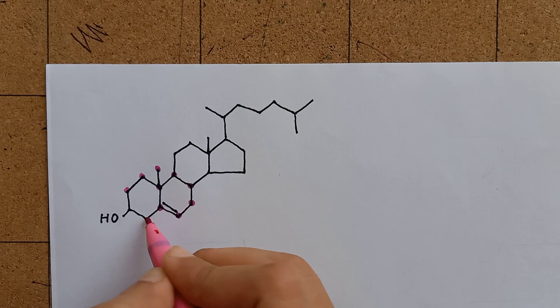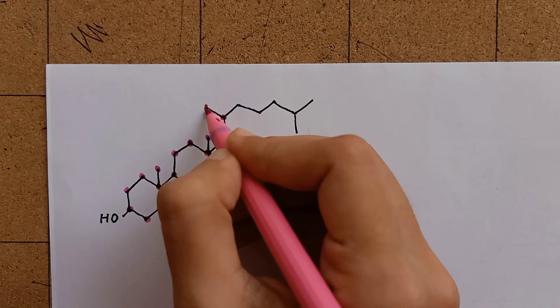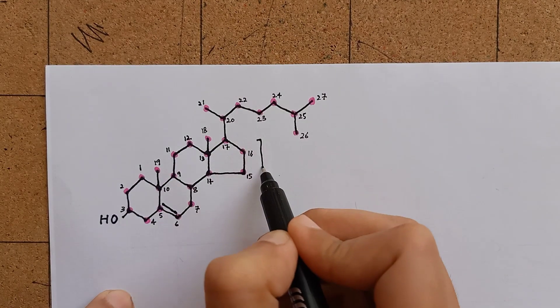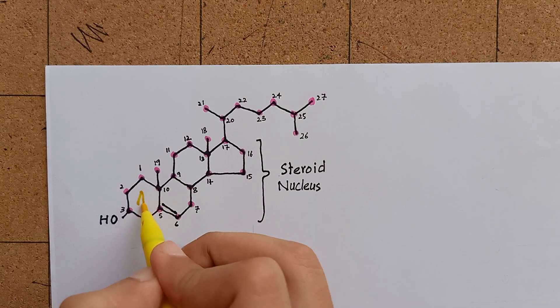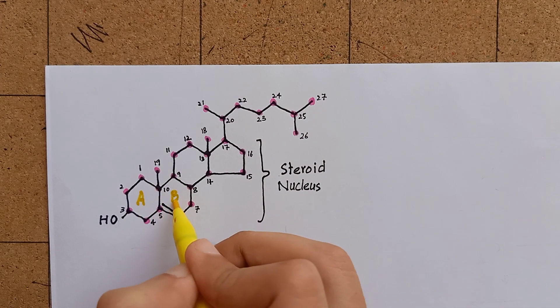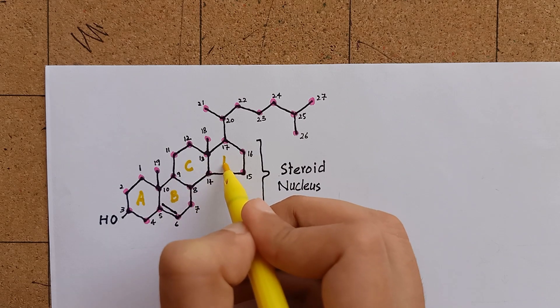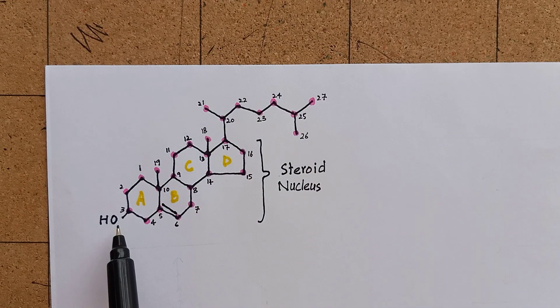Every pink dot represents a carbon atom. In the structure of cholesterol, there is a steroid nucleus consisting of 4 hydrocarbon rings. Three of these rings are 6-membered, containing 6 carbon atoms each, while one of the rings is 5-membered. There is always a hydroxyl group on 3rd carbon.